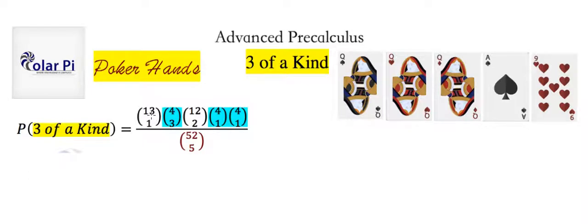And in the numerator, 13 choose one here is saying you've got ace, two, three, four, all the way to a king, that's 13 of them. And so we need to choose one to make our trips. And so this time the one is the queen.